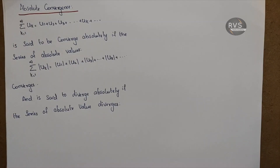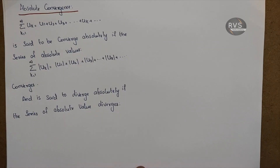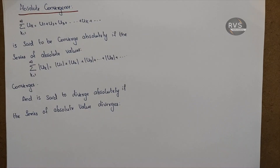How did we learn about alternating series? We learned which alternating series are convergent and divergent. The alternating series has plus and minus signs. If you have minus 1 raised to k, or minus 1 raised to k plus 1, that determines how it turns out to be convergent or divergent.